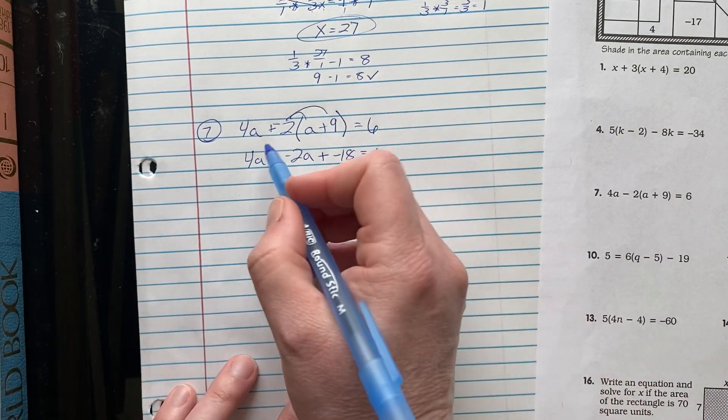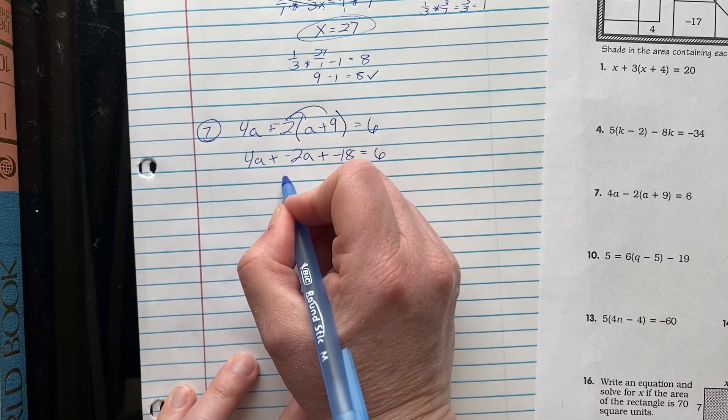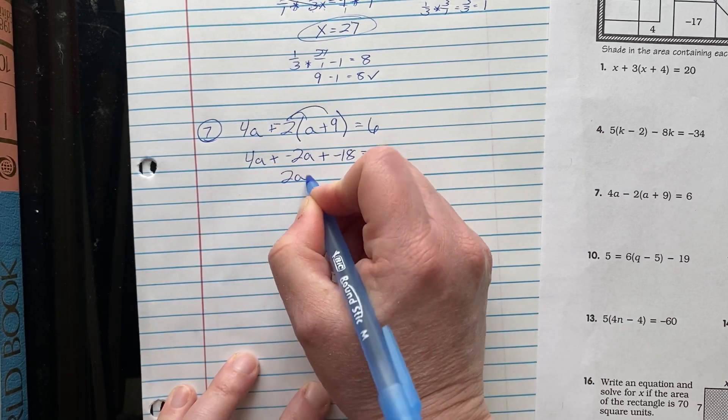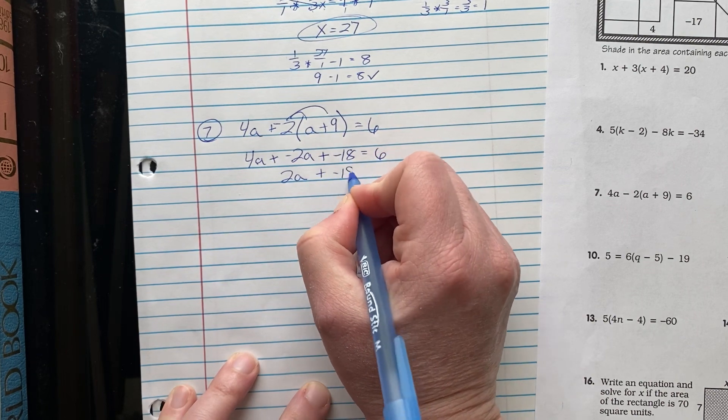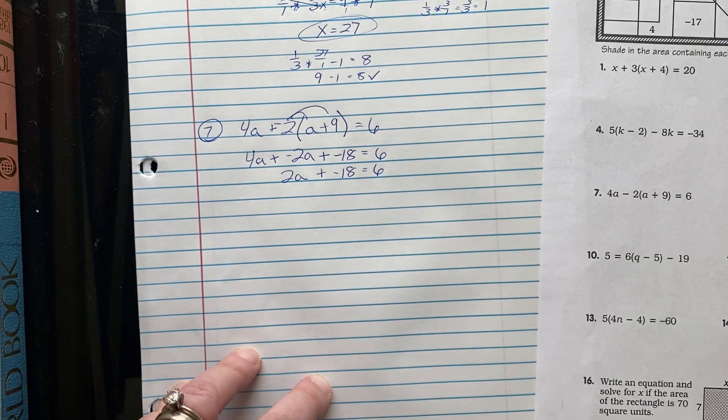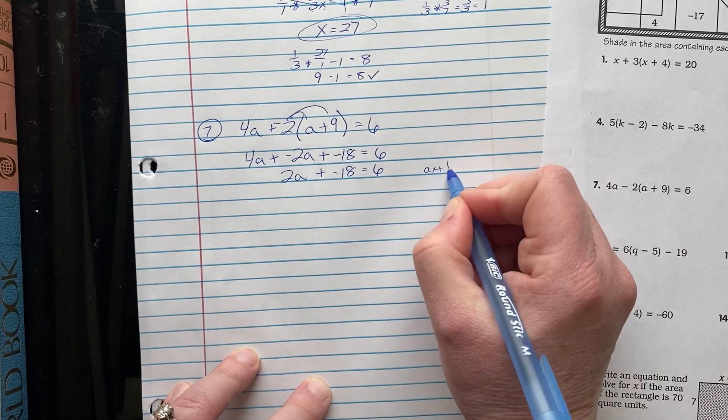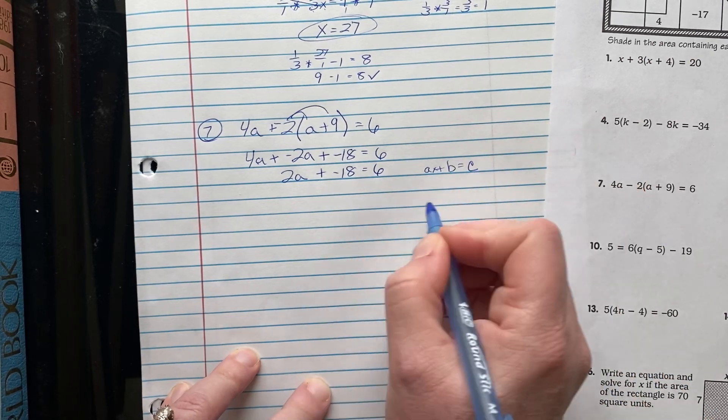Here I can combine like terms. I have 2 constants giving me 2a, not 2 constants, 2 variable terms, my apologies, plus negative 18 equals 6. That's that ax plus b equals c format. We're going to add and subtract first.